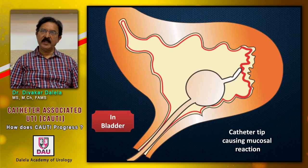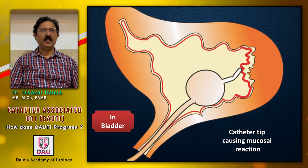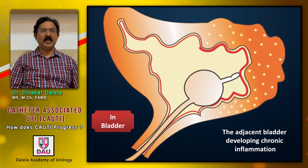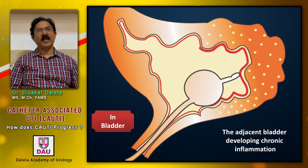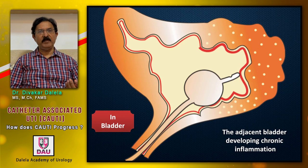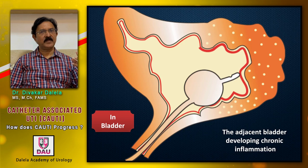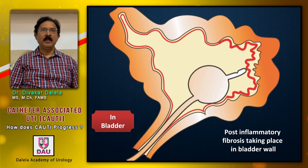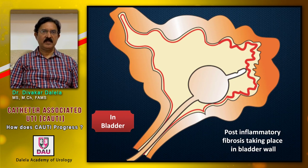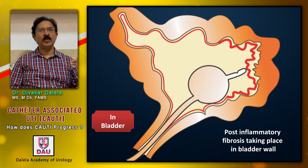In the bladder, the tip of the catheter will rub against the mucosa and cause a mucosal reaction. Not only will the mucosa get edematous, but the underlying bladder wall can become edematous as well. Over a period of time, that segment of the bladder wall in contact with the catheter becomes abnormal. Post-inflammatory fibrotic changes may take place. The mucosa becomes more permeable to bacteria and to urine, and it loses its GAG layer.